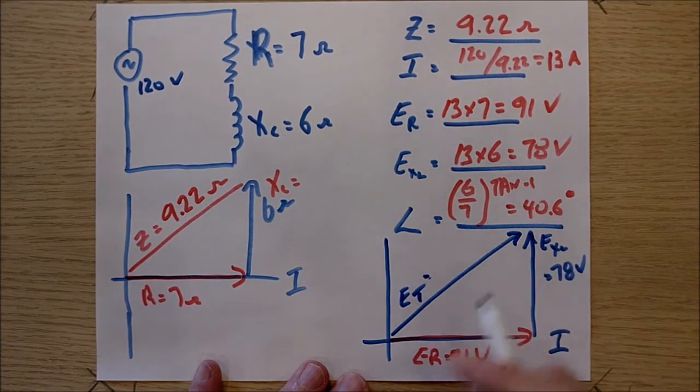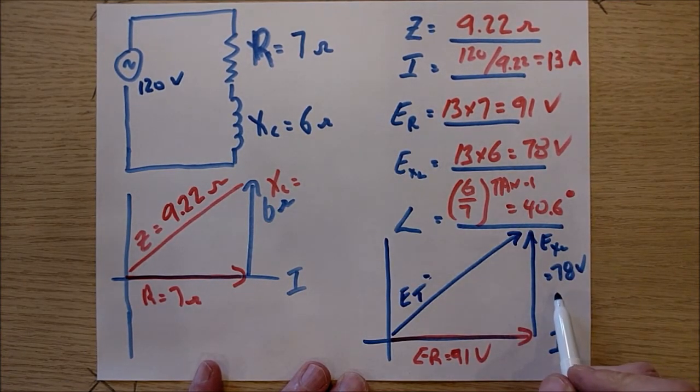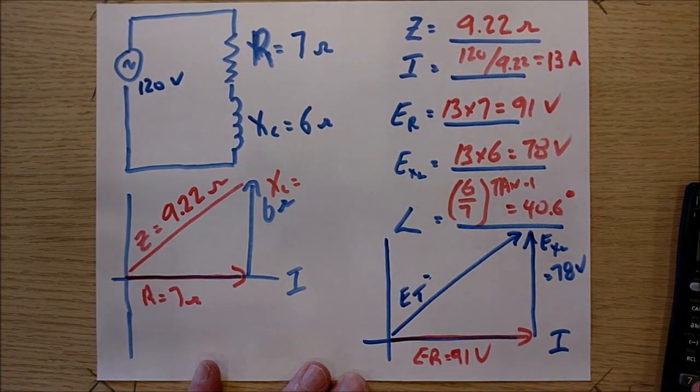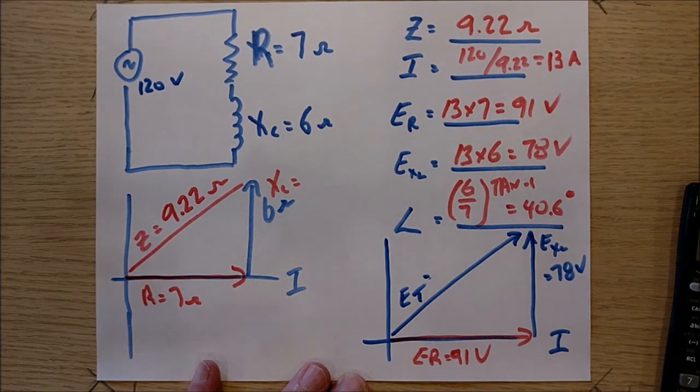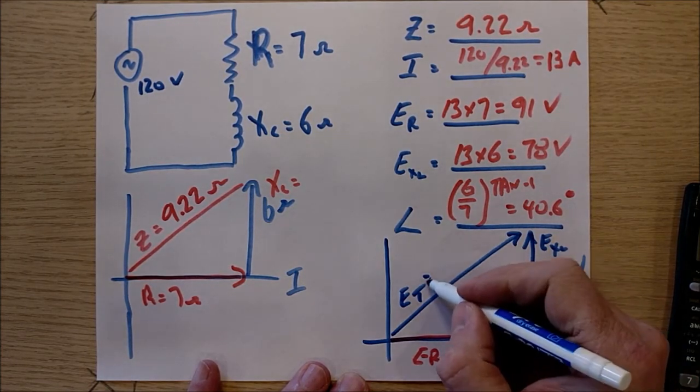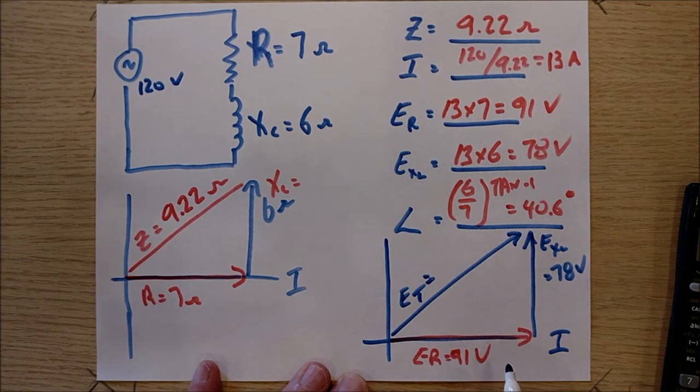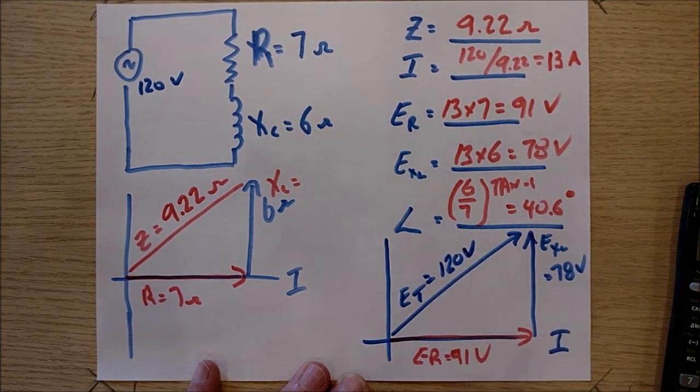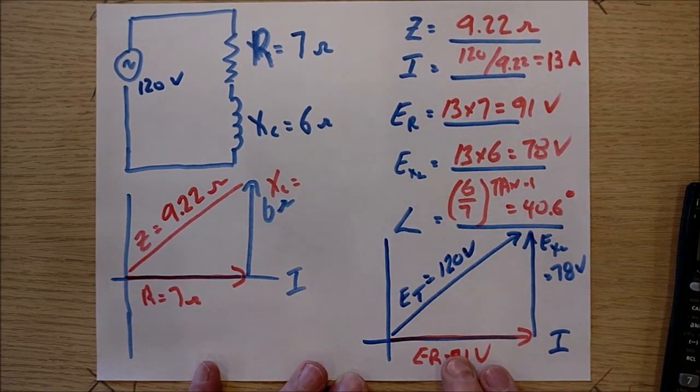And it should be 91 squared plus 78 squared square root. So I'm going to do that right now. 91 squared plus 78 squared equals root equals. Says 119.85. Close enough. It's 120 volts. There's a little tiny bit of rounding there. Who cares?